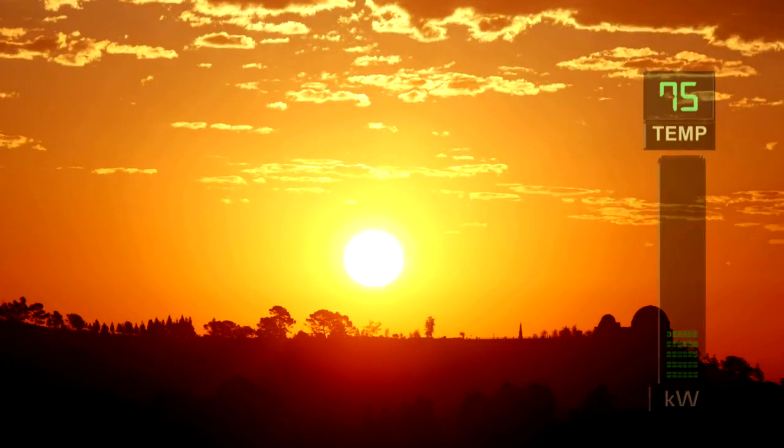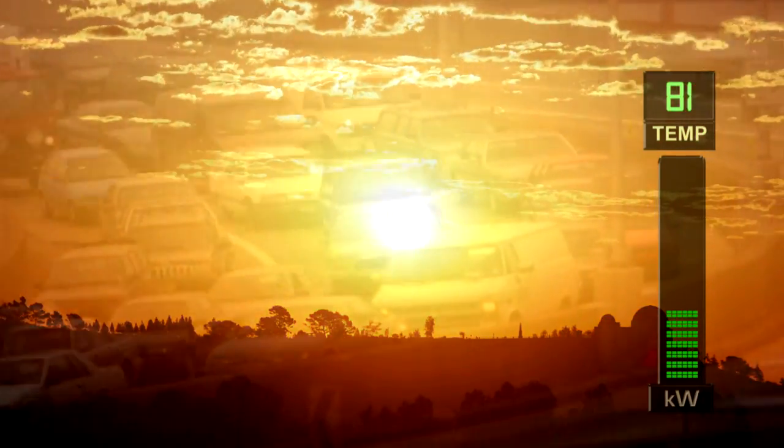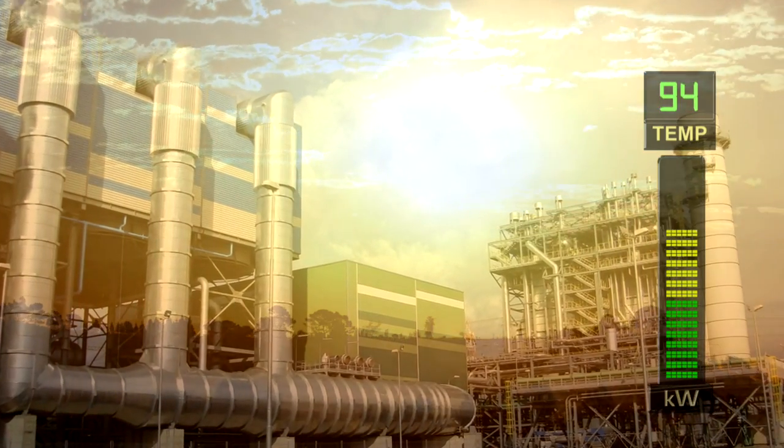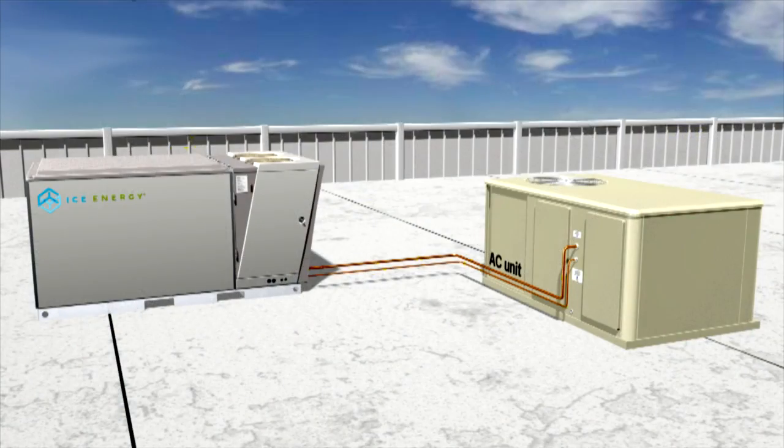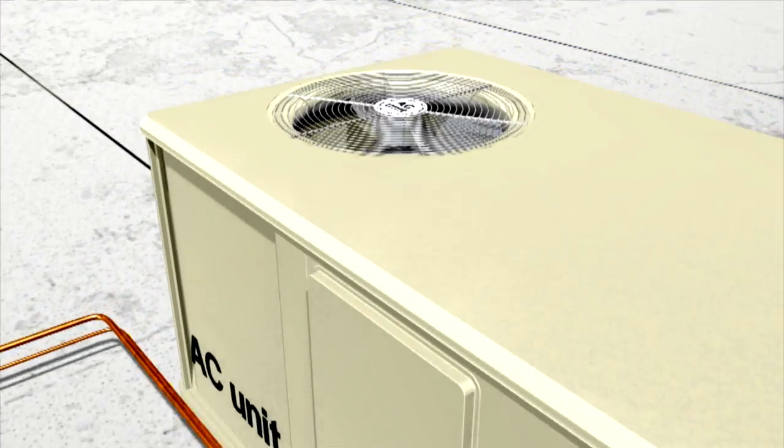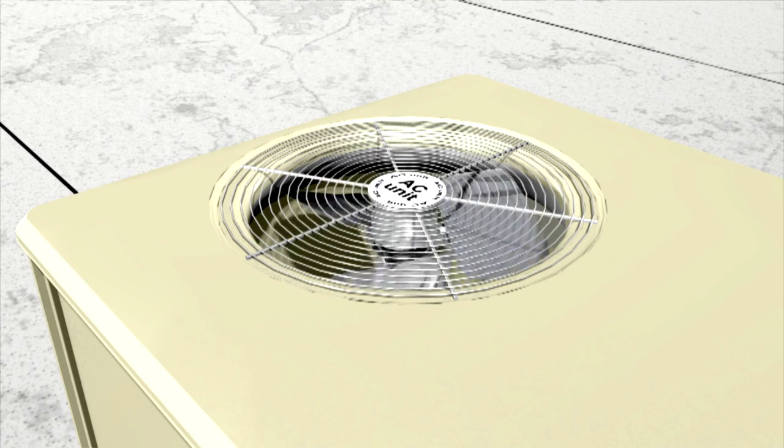As daytime temperatures rise, the power consumption of air conditioning rises along with them, pushing the power grid to peak demand level. It's during this peak window that the IceBear takes over and the power-guzzling compressor of the air conditioner shuts down.